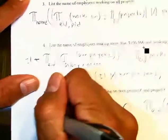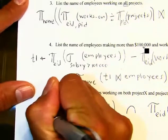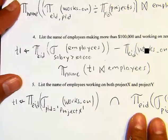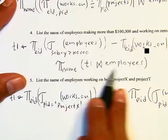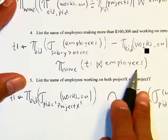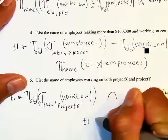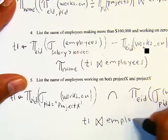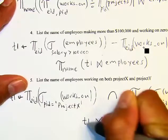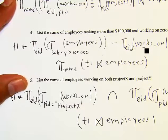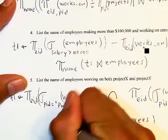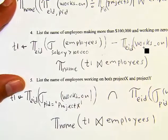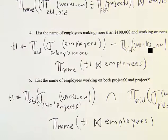We assign that intersection result to T1. To get the names, we join T1 with the employees table and project on name. That gives us the final answer.